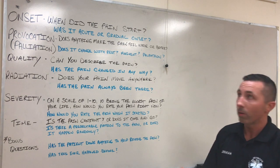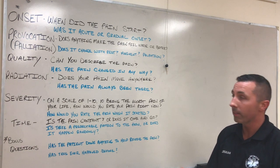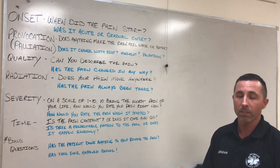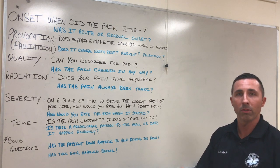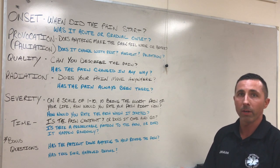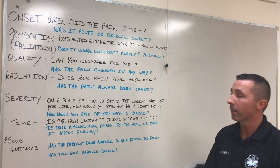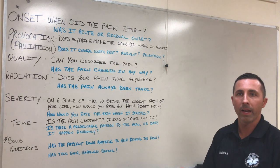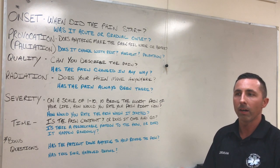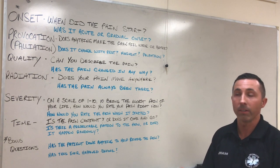We'll start with O. O is for onset, and we want to ask, when did the pain start? It's going to tell us when the pain started, how long it's been going on, and it's going to help paint a timeline for us. A great clarifying question to ask would be: is the pain acute — did it happen suddenly — or was it a gradual onset? Someone who has sudden or abrupt pain usually is suffering from some serious underlying illness or injury.